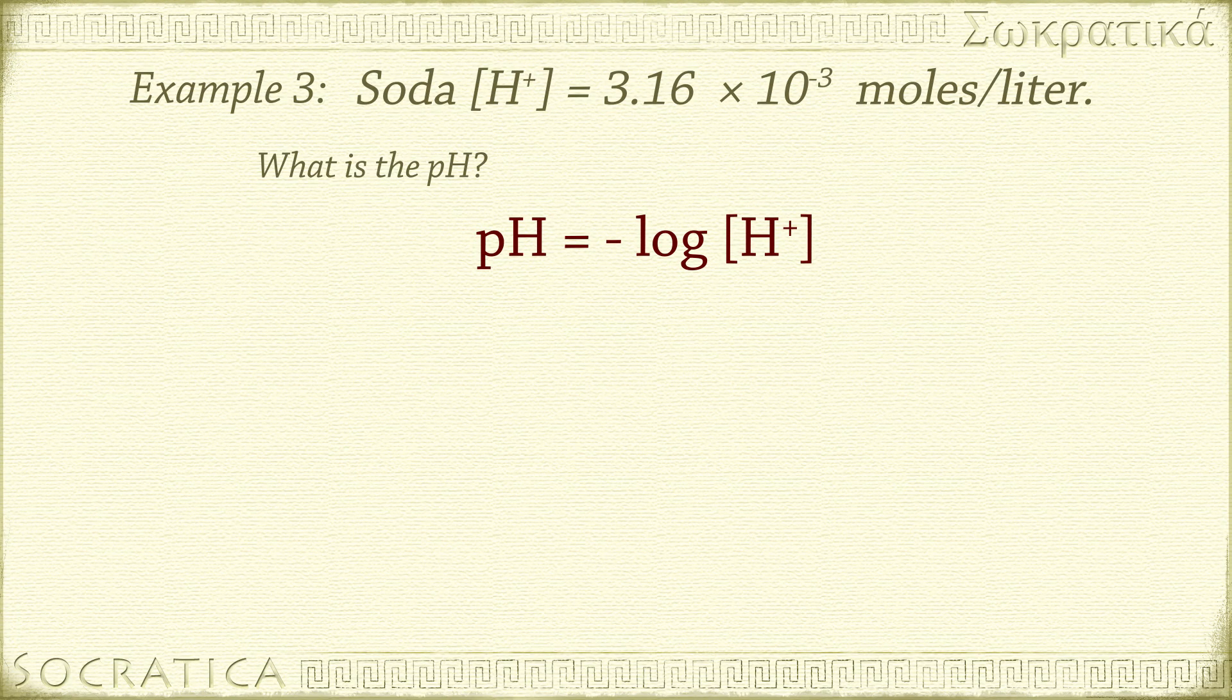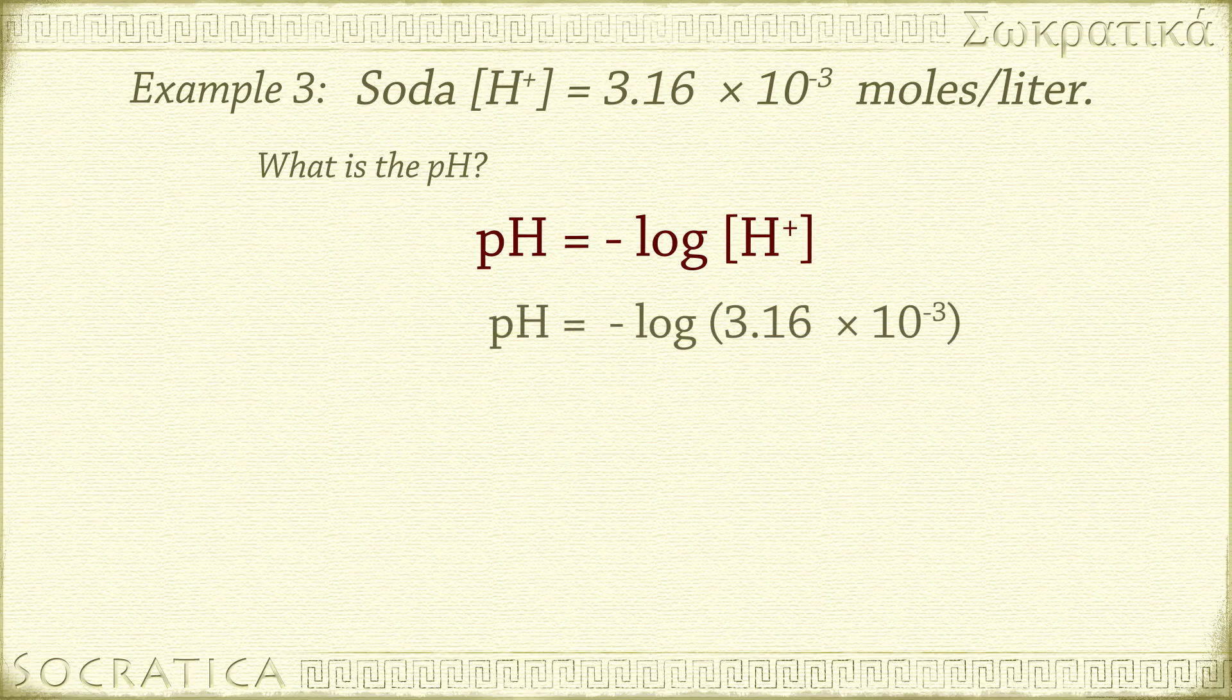pH equals negative log of the concentration of H+ ions. So pH equals negative log of 3.16 times 10 to the negative 3. pH equals 2.5. Wow, that's pretty acidic. You drink that stuff?